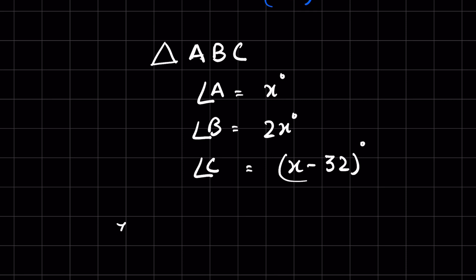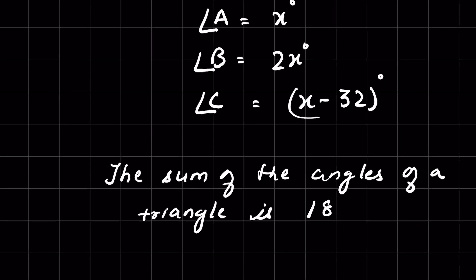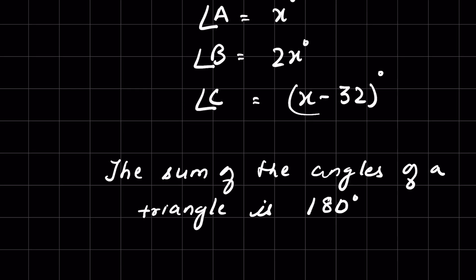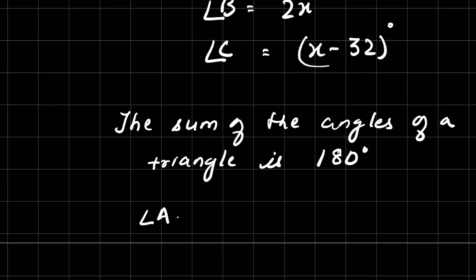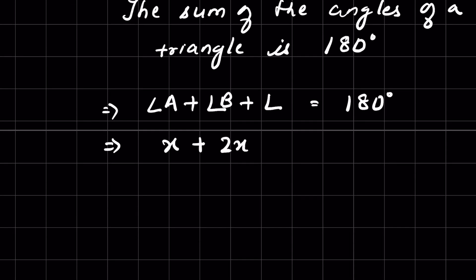Now, we know in a triangle, the sum of the angles is 180 degrees. That means angle A plus angle B plus angle C is equal to 180 degrees. Given that angle A is x, angle B is 2x, plus angle C is x minus 32, equals 180 degrees.